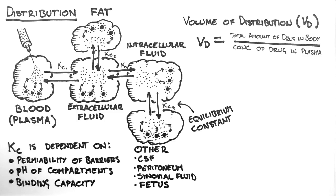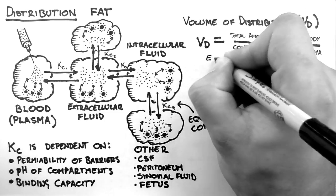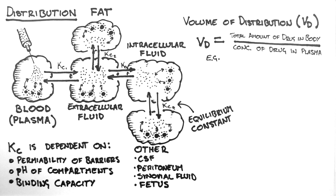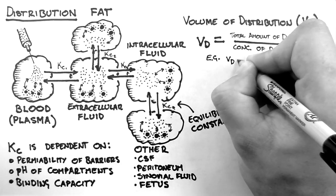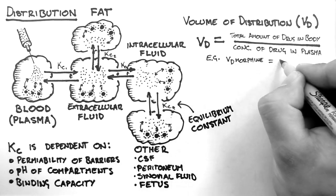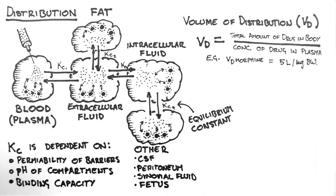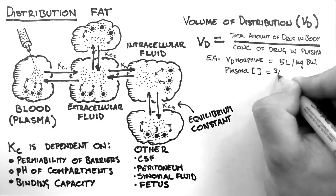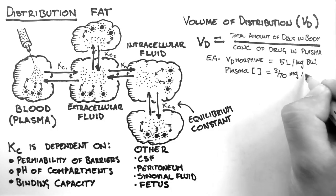I'll give you an example of how it might be used. Say I want to get a plasma concentration of morphine of 3/70ths of a milligram per litre. How much morphine do I have to give a 70 kilogram patient? I know that the volume of distribution of morphine is about 5 litres per kilogram of body weight, and I'm trying to achieve a plasma concentration of 3/70ths of a milligram per litre.